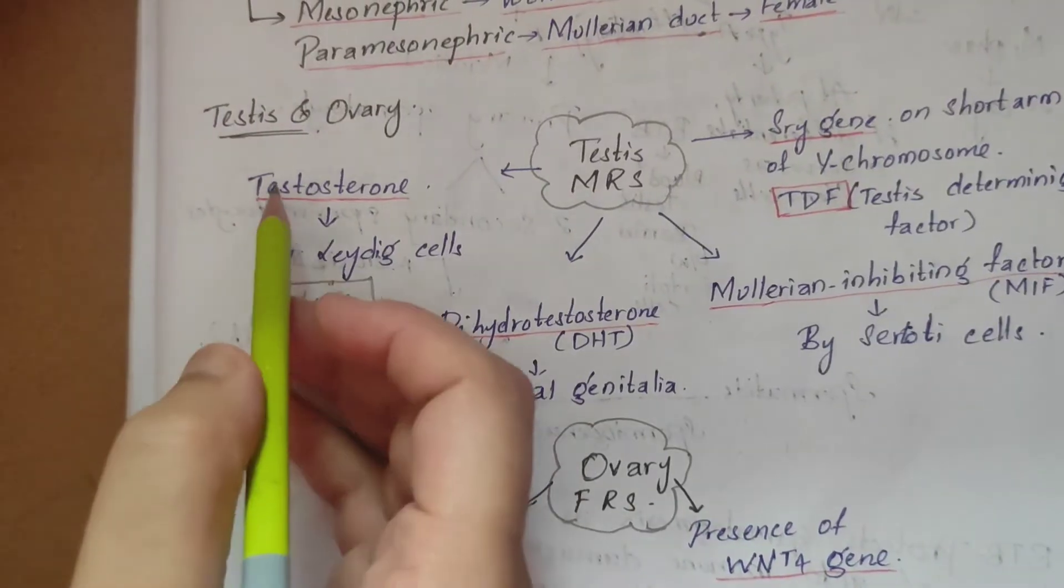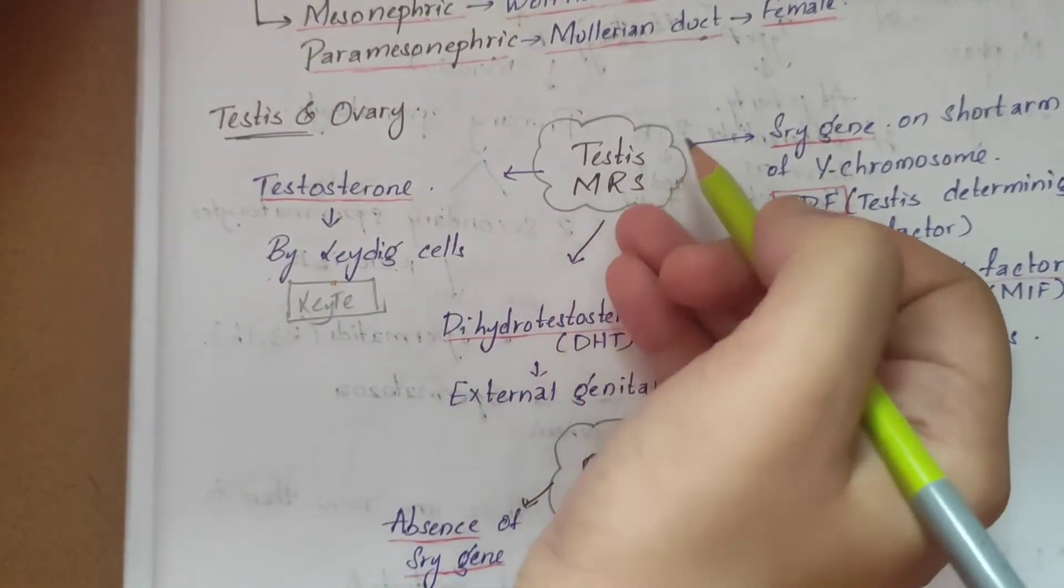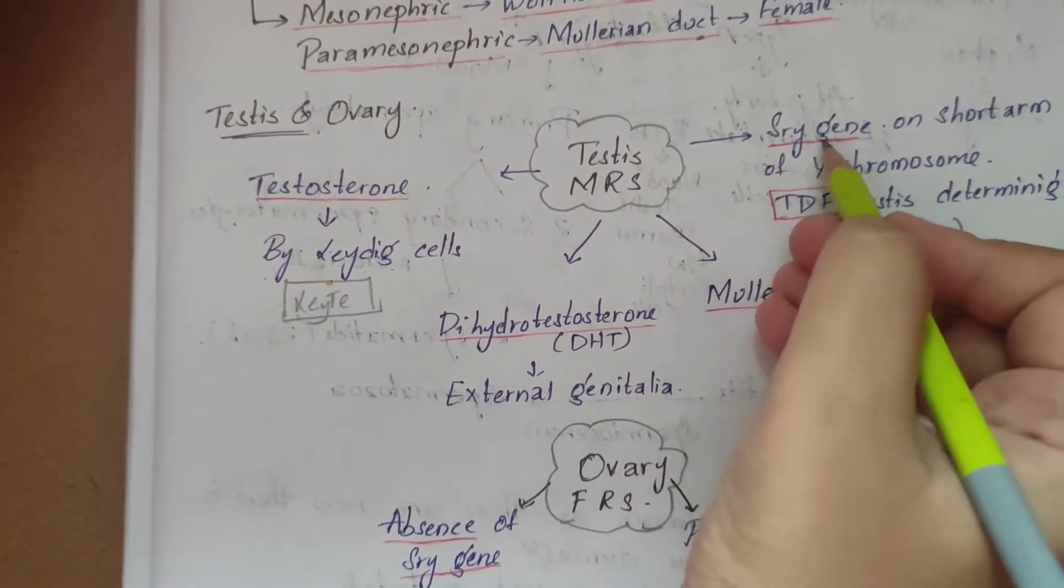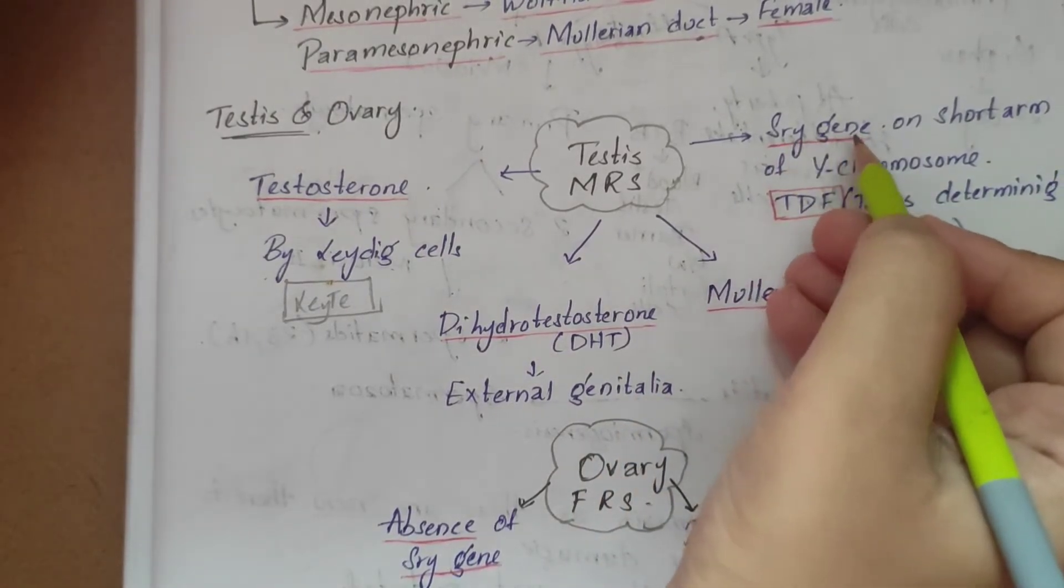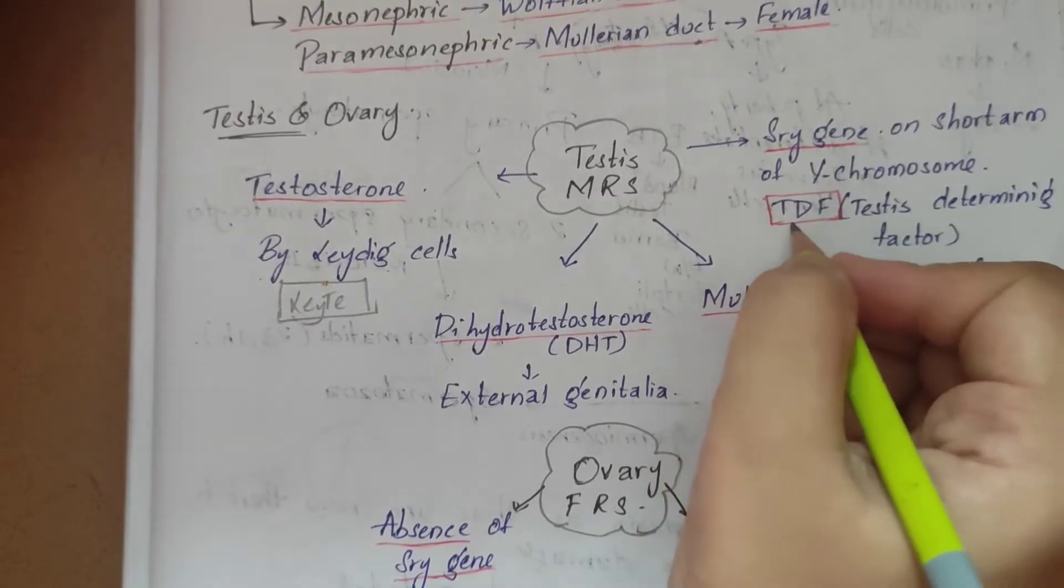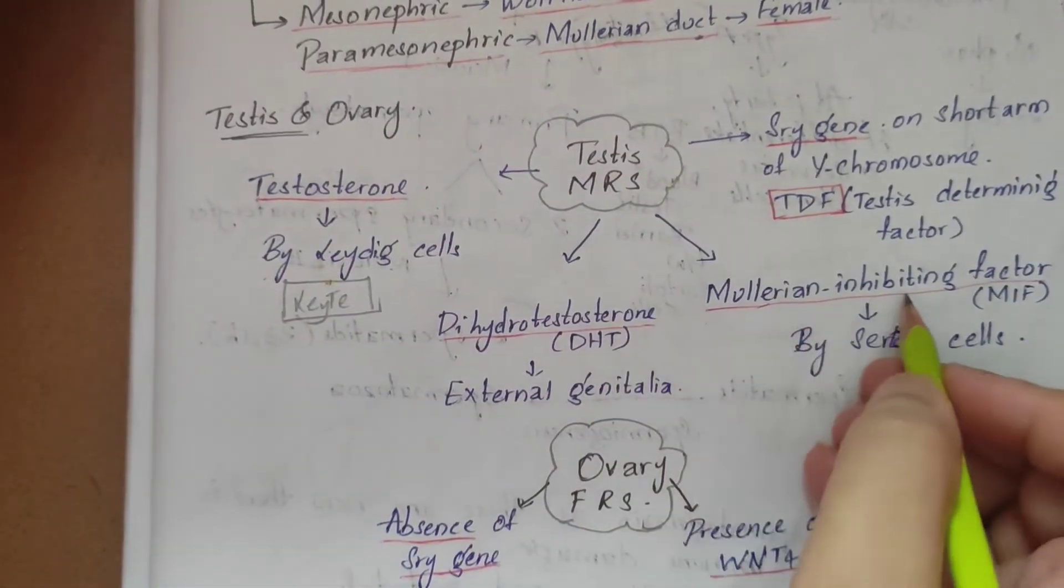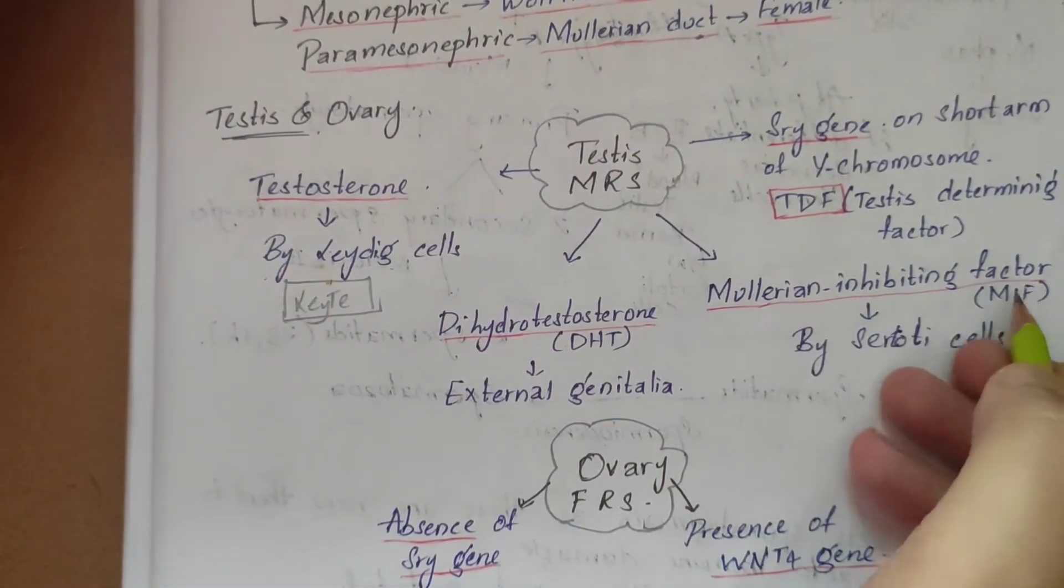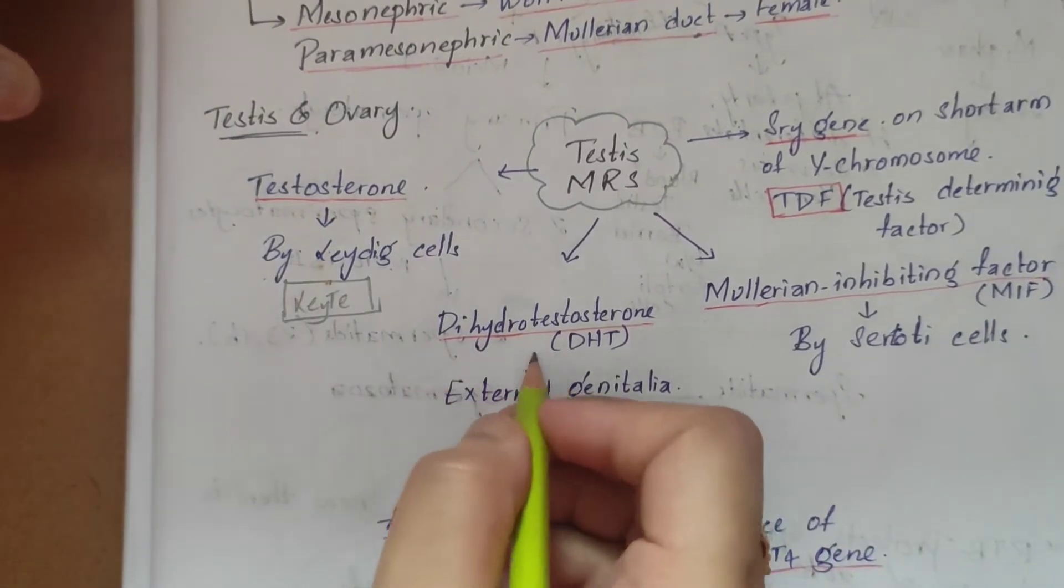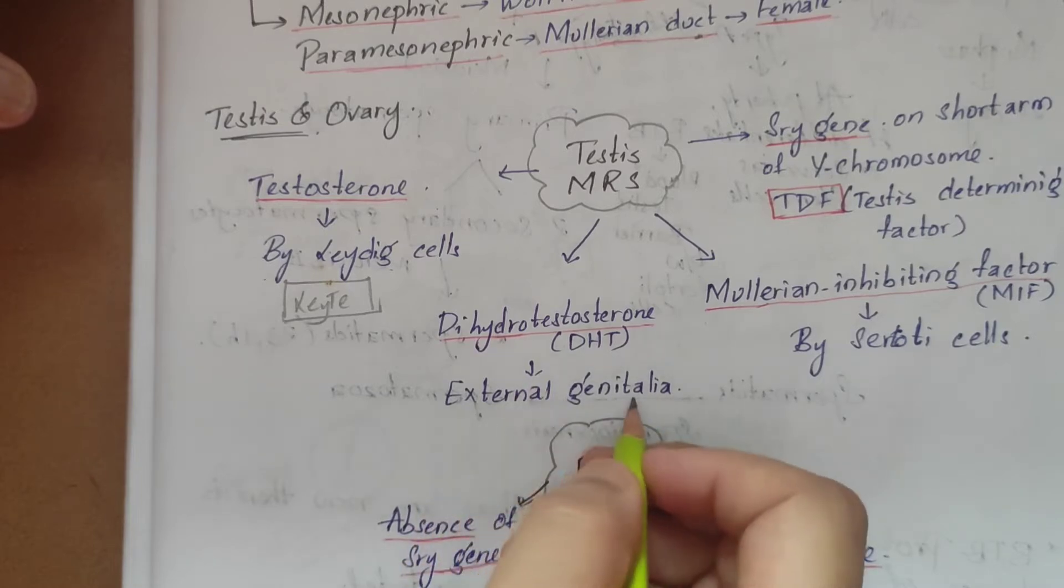Next is testis and ovary. The testis or male reproductive system has four characteristics: the SRY gene on the short arm of the Y chromosome, and it has TDF - testis determining factor - and Müllerian inhibiting factor (MIF), which are produced by the Sertoli cells.